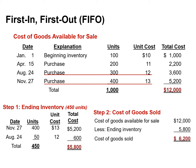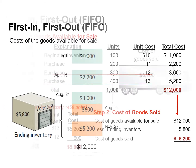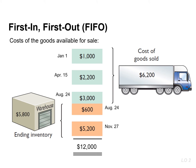We calculate the cost of goods sold by subtracting ending inventory from the cost of goods available for sale. We had $12,000 of goods available for sale and assigned $5,800 to ending inventory, which means $6,200 is assigned to cost of goods sold. Companies can also calculate cost of goods sold by pricing the 550 units sold using the prices of the first 550 units acquired. There were 300 units purchased on August 24th, but only 250 units are assumed sold, because 50 of those units were assumed unsold and included in ending inventory.